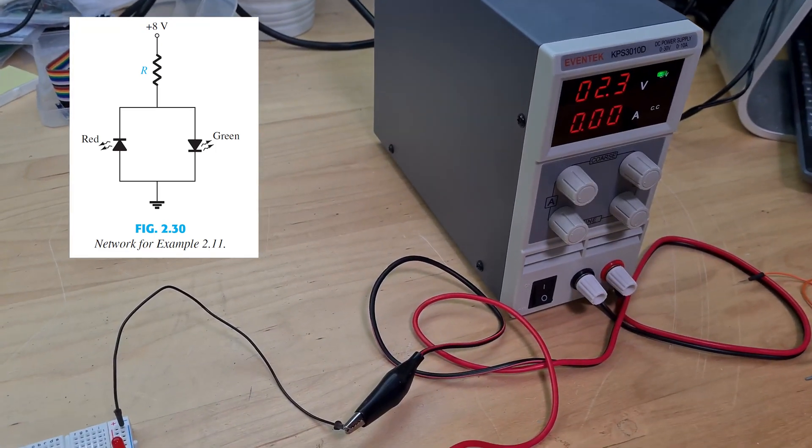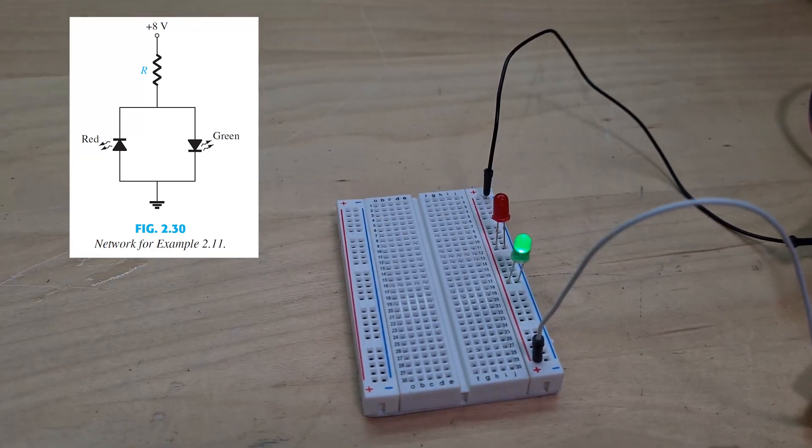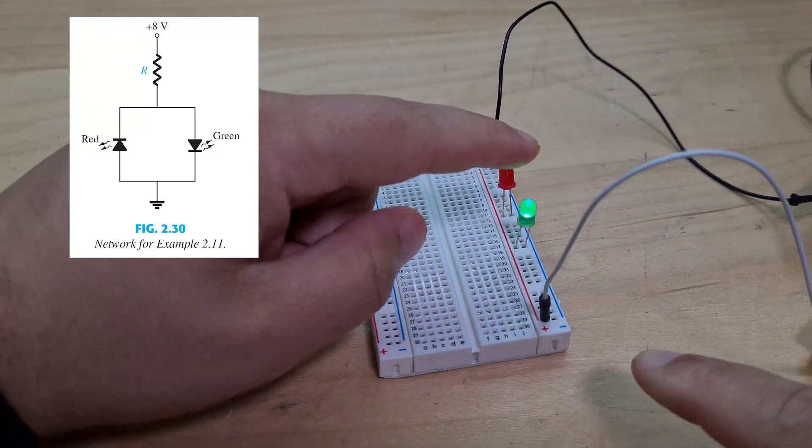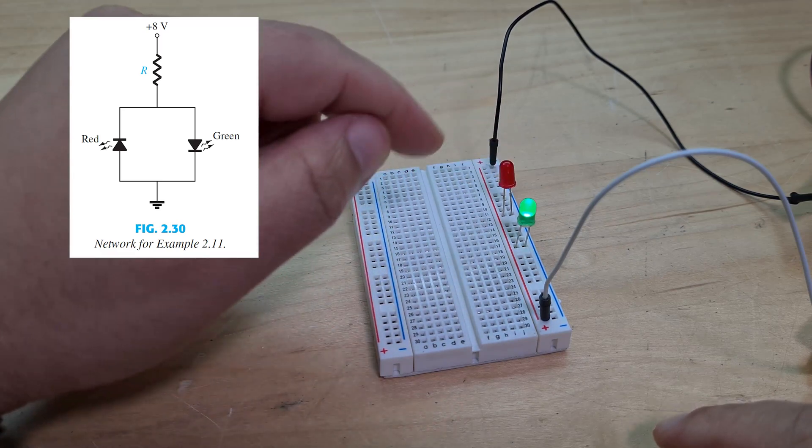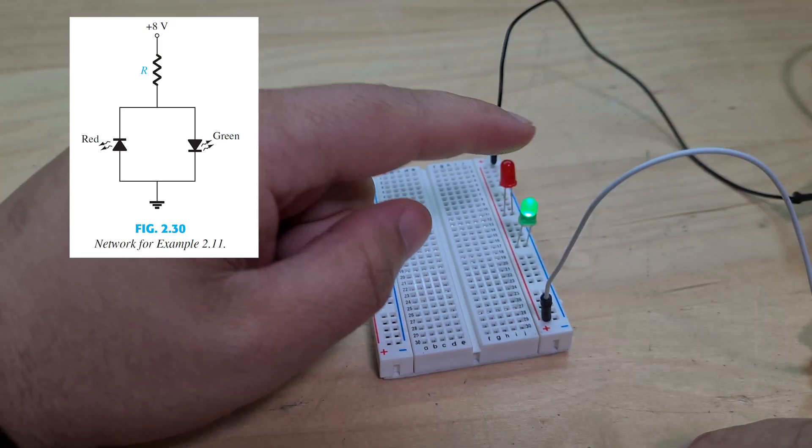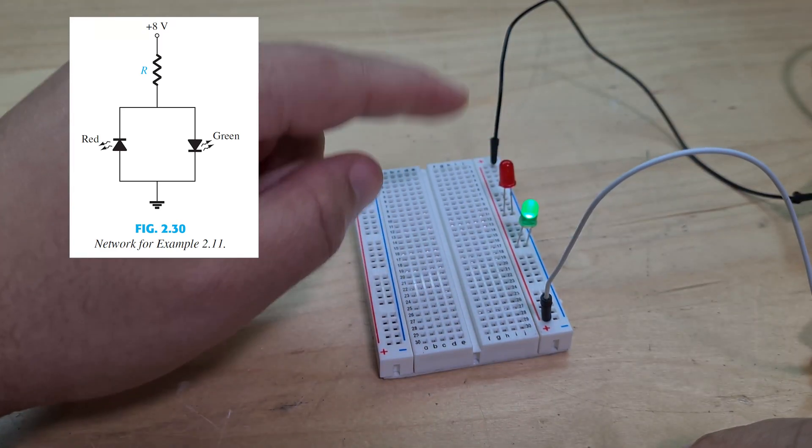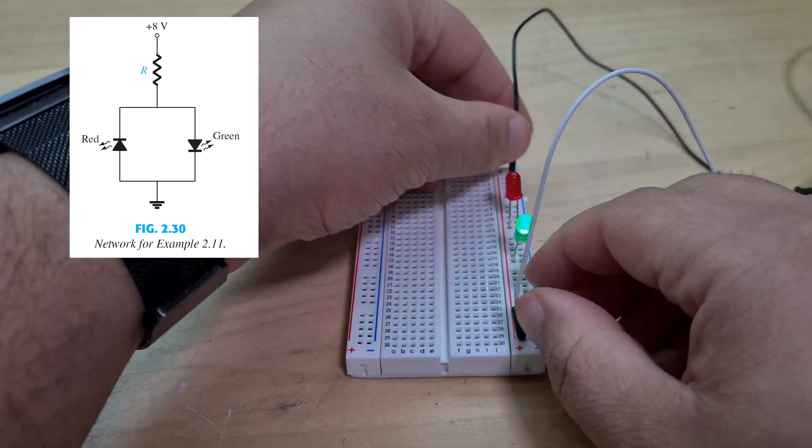As you can see here, currently right now the green LED is lit and the red one's off. The reason for that is because the green LED is forward biased and the red one is reverse biased. If I switch them around...